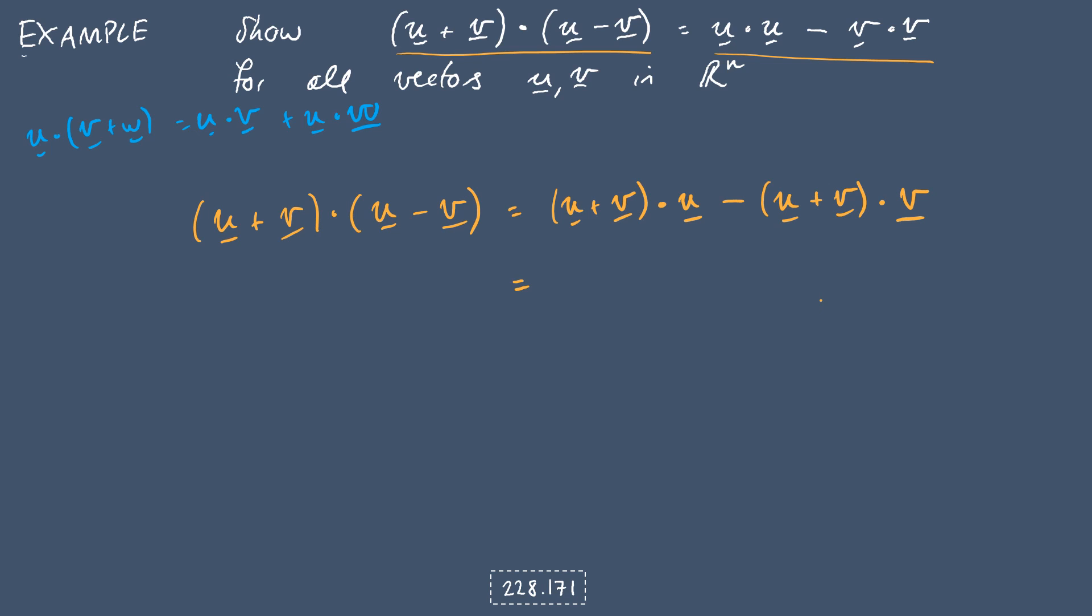Now we'll expand out all of these brackets as well. So we'll get u dot u plus v dot u minus u dot v minus v dot v. And if you notice back a slide, we also have that the order of the dot product doesn't matter. So we know that u dot v is equal to v dot u. So these two terms here will cancel themselves off. So overall, we'll be left with u dot u. These two will cancel to zero, and we get minus v dot v, which is what we were after.